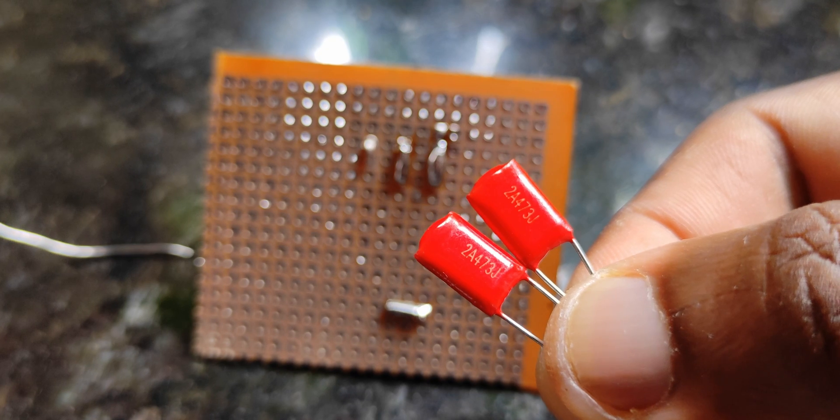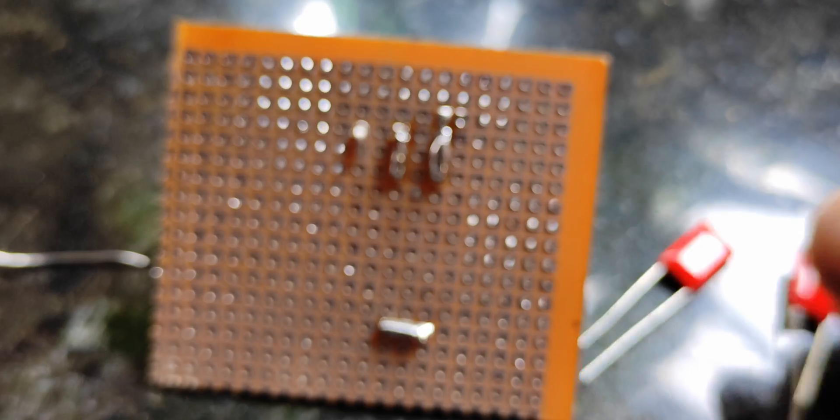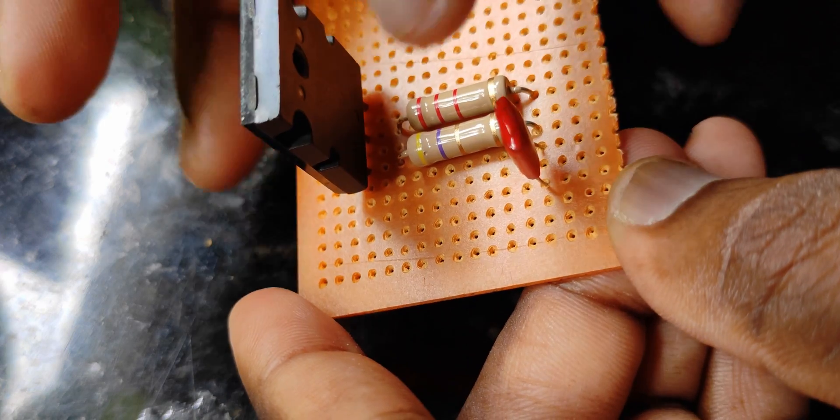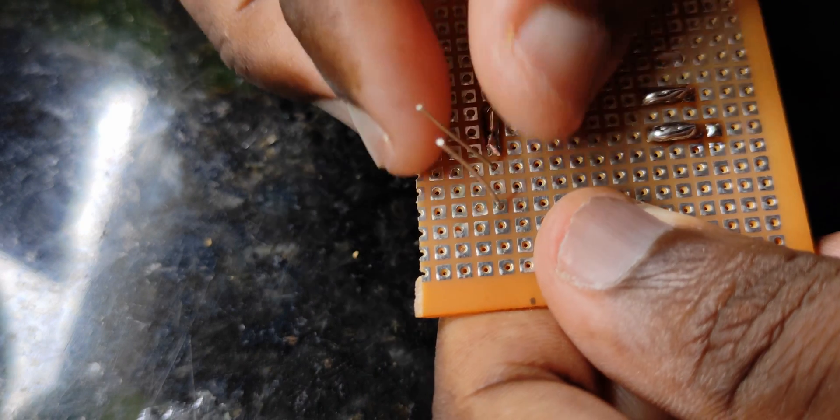This is the capacitor I'm talking about: 2A473J, a 100 volt cap. Set the cap right next to the 4.7 ohm resistor like this.